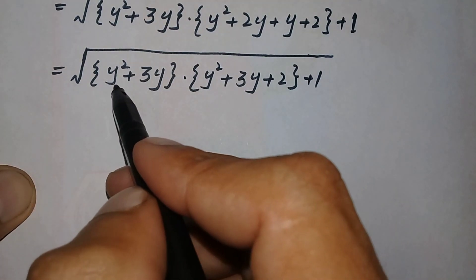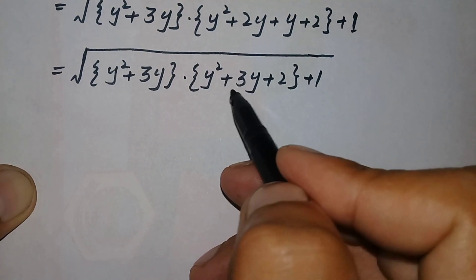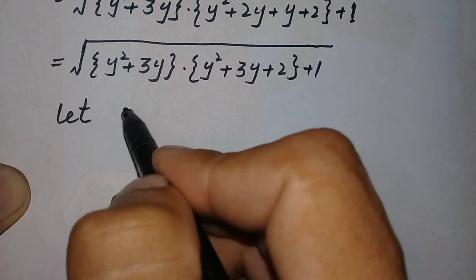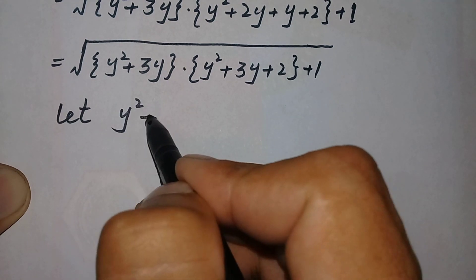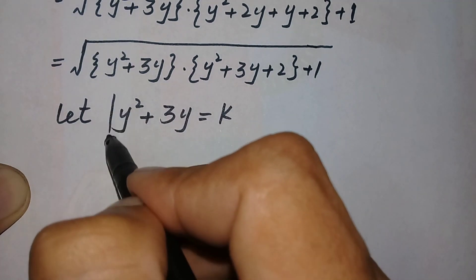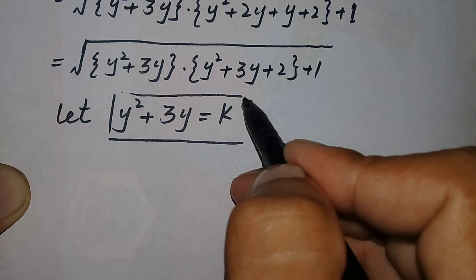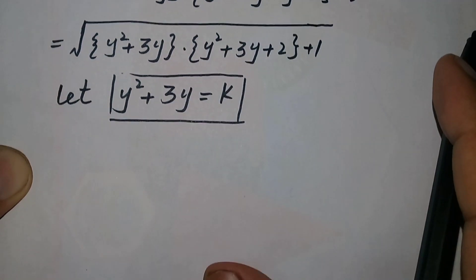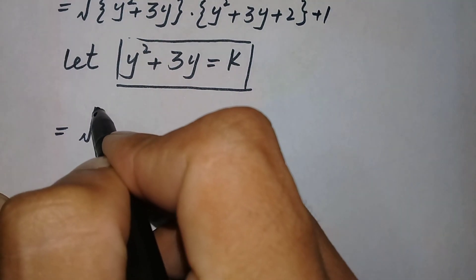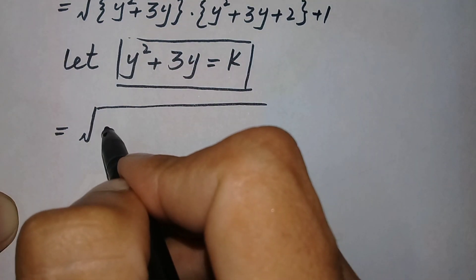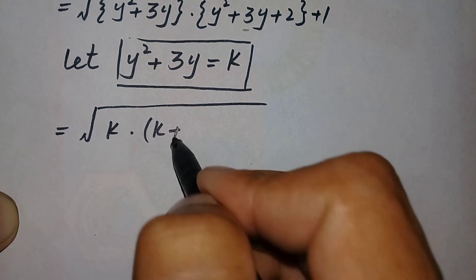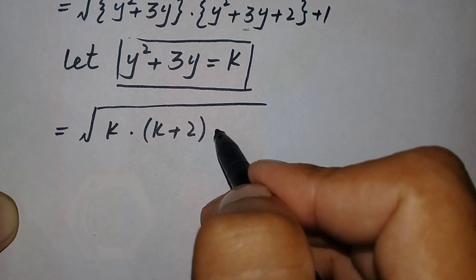Since y squared plus 3y appears in both terms, let us substitute k equals y squared plus 3y. Replacing in the equation, it becomes the square root of k times (k plus 2) plus 1.